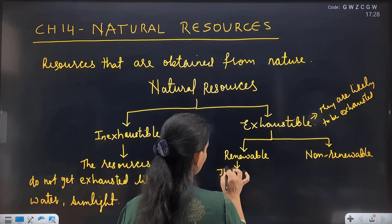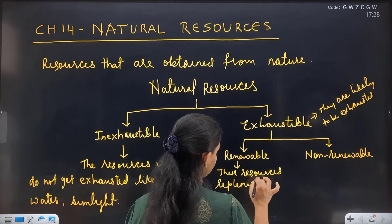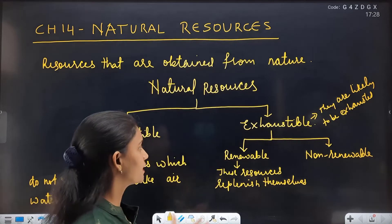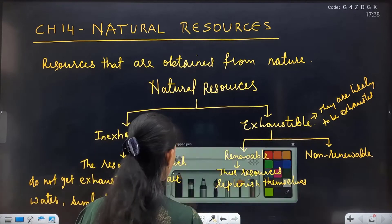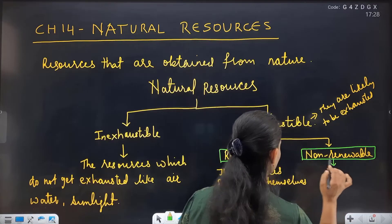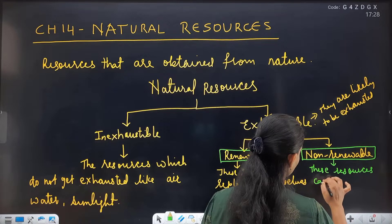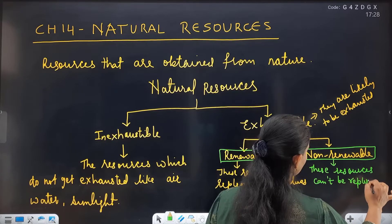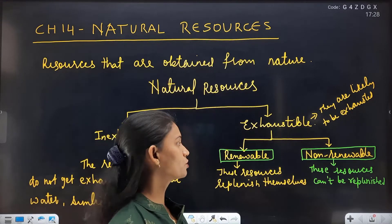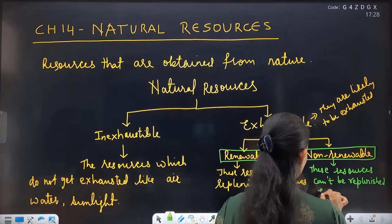In Renewable resources, these resources replenish themselves — matlab ye khatam ho sakте hain lekin time to time ye apne aap ko replenish kar lete hain. Non-renewable resources can't be replenished — ye ek baar khatam ho gaye toh dubara form nahi hote, kyunki ye woh resources hain jo millions of years lete hain form hone mein. Example hai fossil fuels.